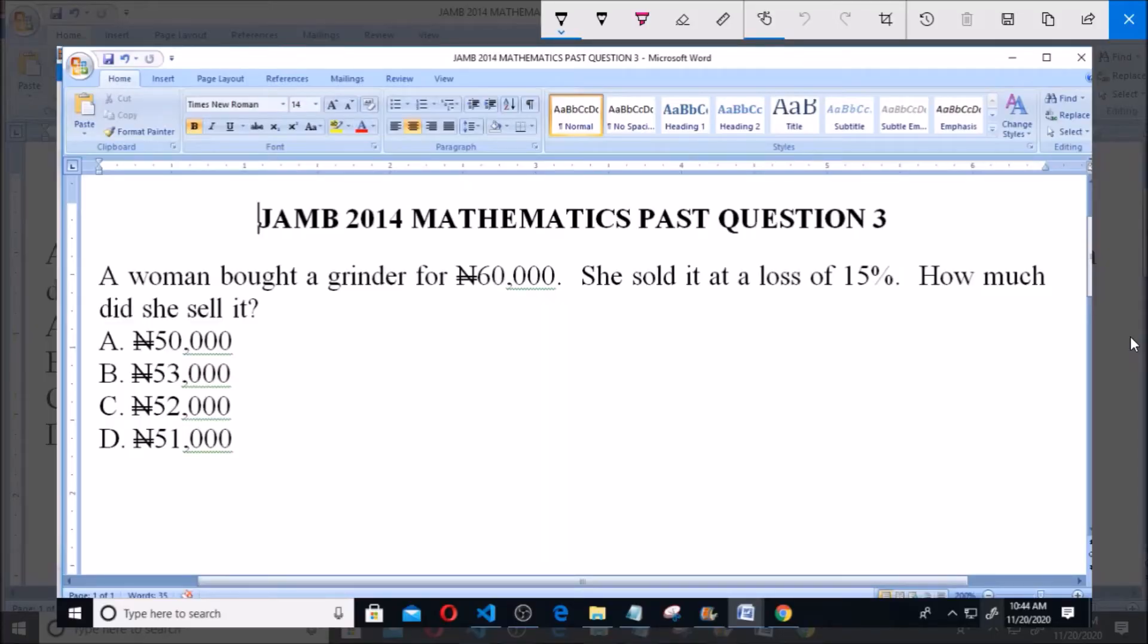Good day and welcome. I'll be answering JAMB 2014 Mathematics past question three: A woman bought a grinder for 60,000 naira. She sold it at a loss of 15%. How much did she sell it?